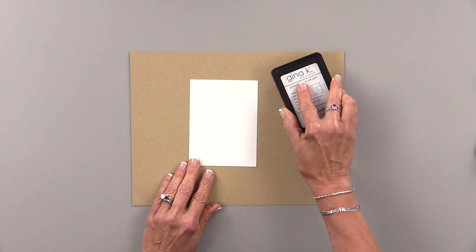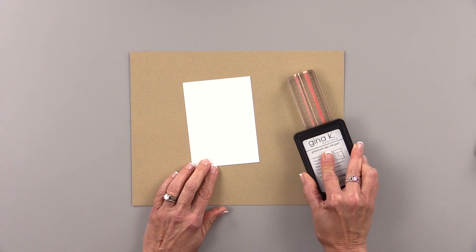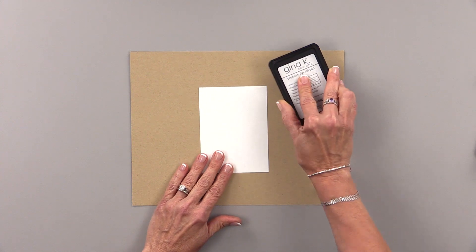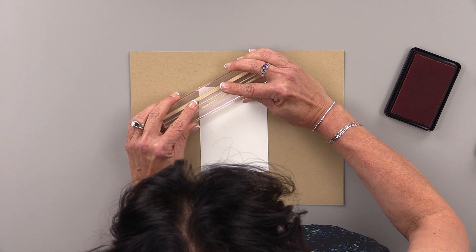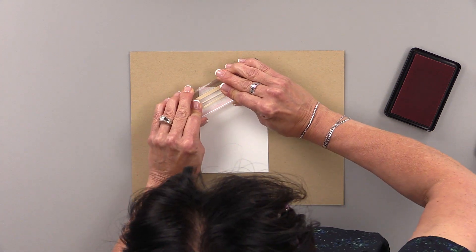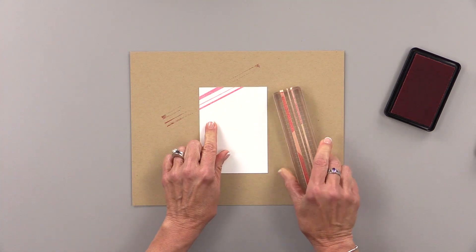I'm going to ink these rubber bands up just like they were a rubber stamp. I'm just patting on some dusty rose ink and then I'm going to stamp this on an angle going down my entire card.